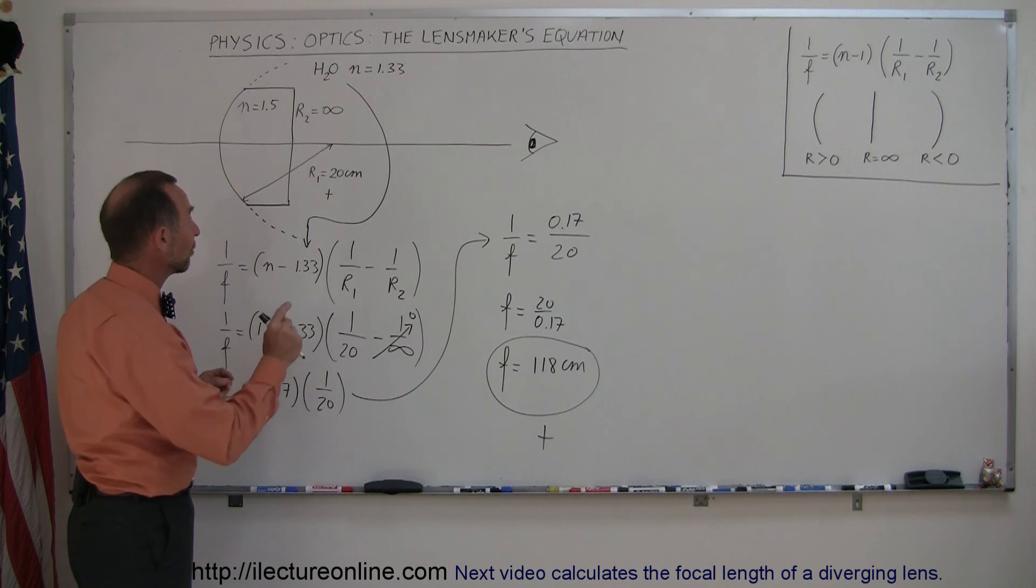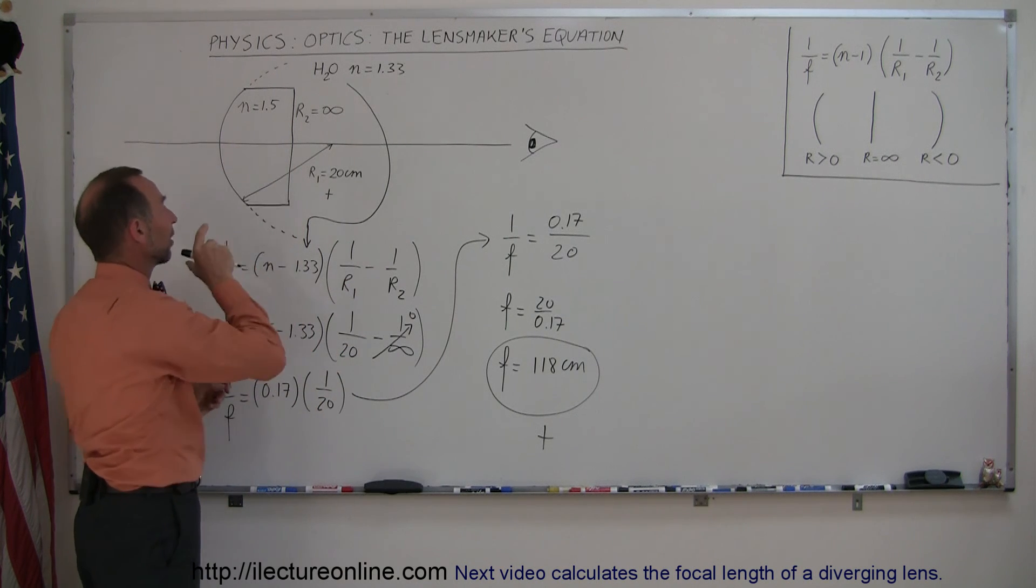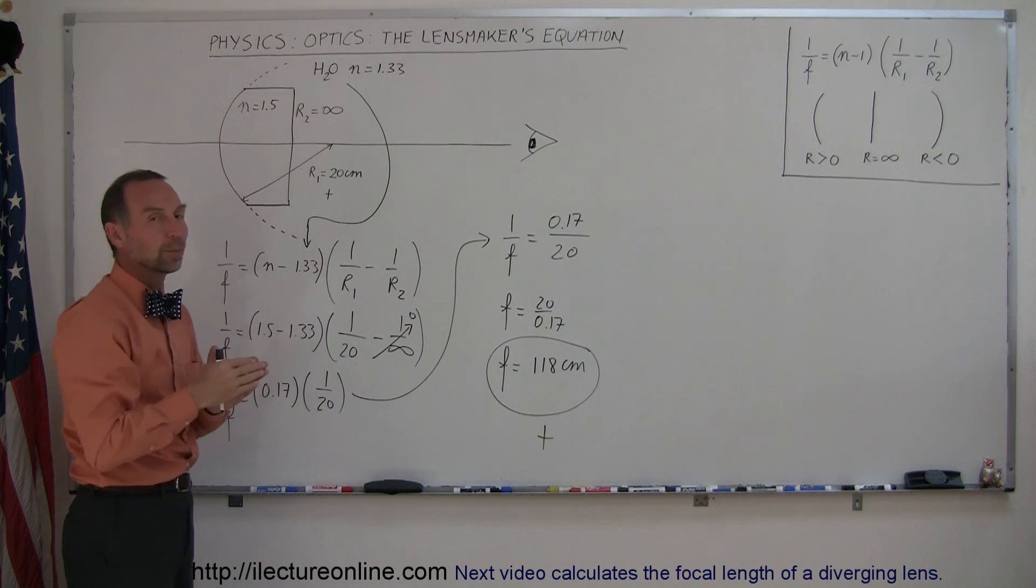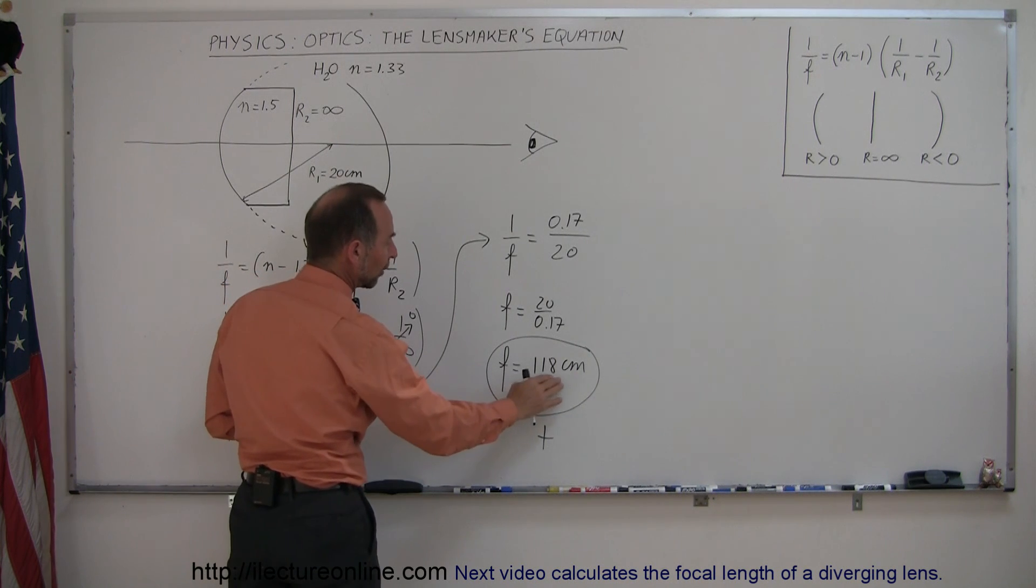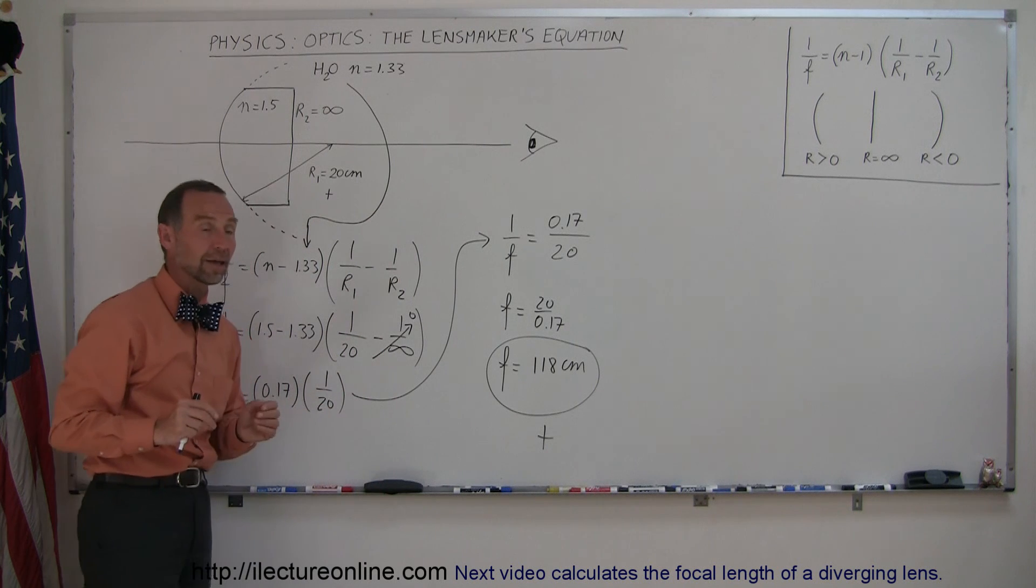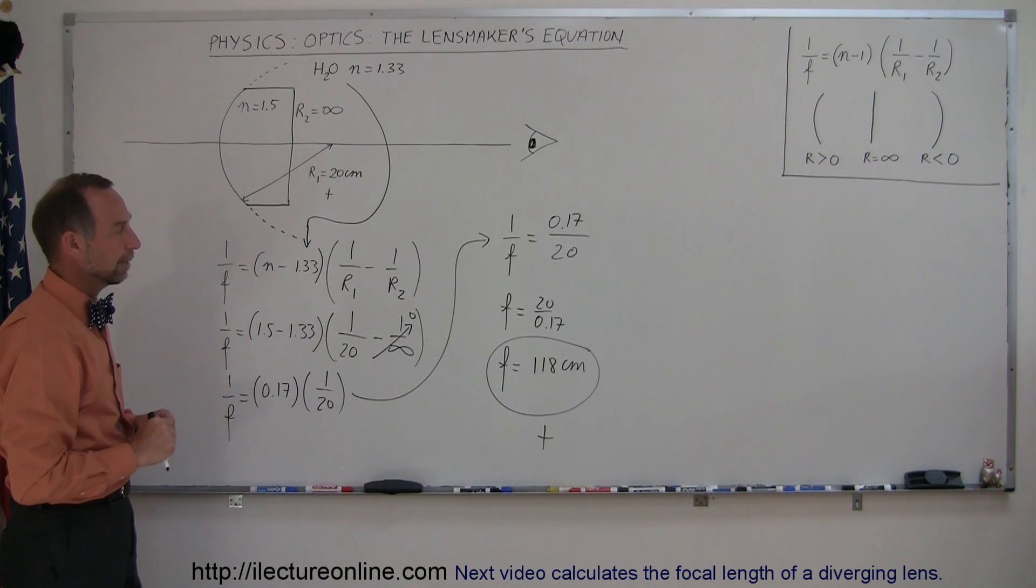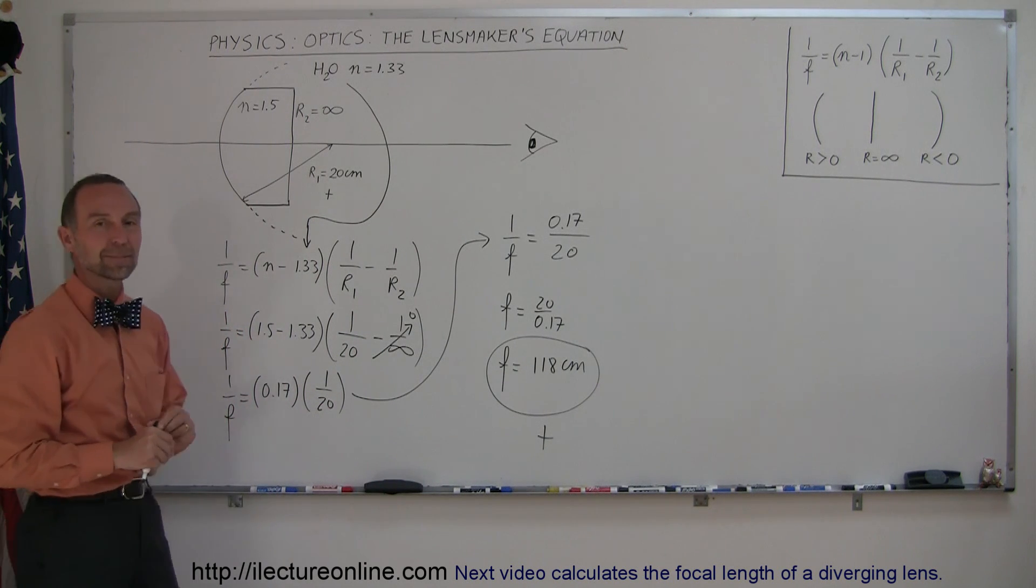We will find it to be very different when we take the lens out of water and put it in air. The focal length will be different. In this case, the focal length as the lens is in water is 118 centimeters. It is still a converging lens because it's positive. On to our next example.